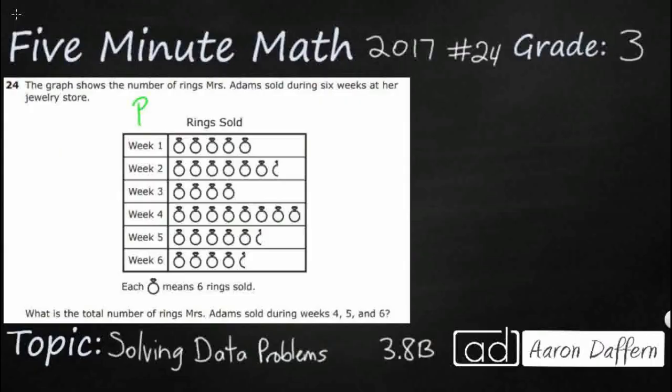So we have a pictograph here and the most important part of any pictograph is always going to be right underneath it. It is the key and remember that the key is the key. If you don't know what the key is you're not really sure what you're looking at. So we've got a little situation with Mrs. Adams. She is selling rings in a jewelry store and they're going to use a ring itself and it's going to represent a number. So in this case each ring represents six rings sold. And then we're supposed to do something with this. We're supposed to add up the total number sold in weeks 4, 5, and 6.